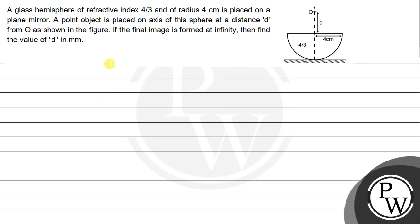Hello, let us see this question. A glass hemisphere of refractive index 4 by 3 and of radius 4 cm is placed on a plane mirror. A point object is placed on the axis of this sphere at a distance d from O as shown in the figure. If the final image is formed at infinity, then find the value of d in mm.